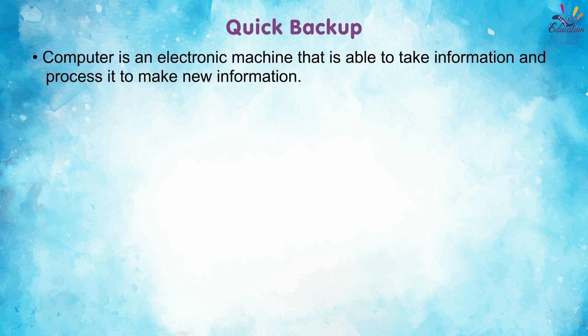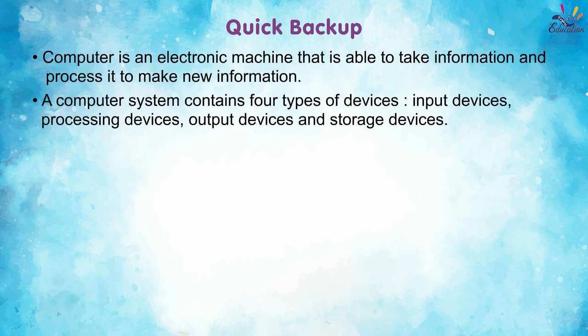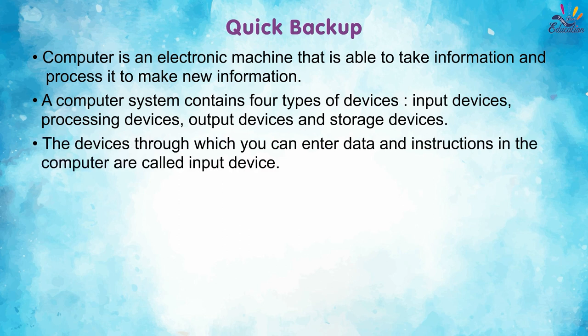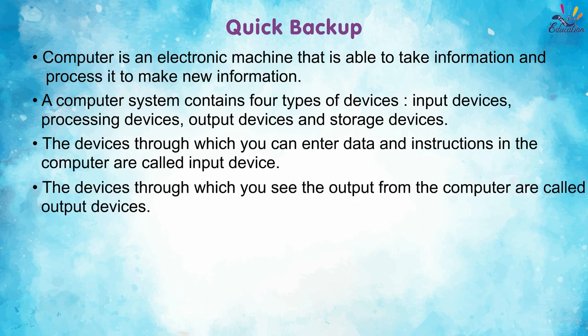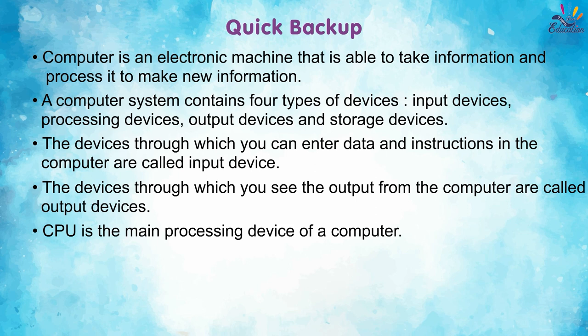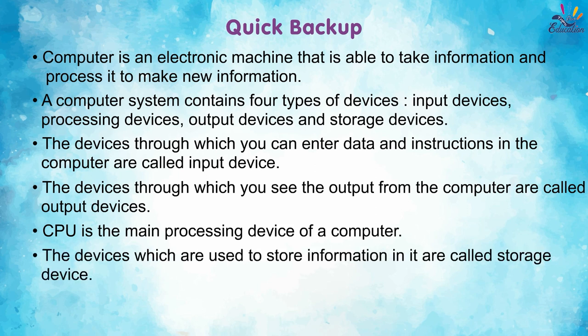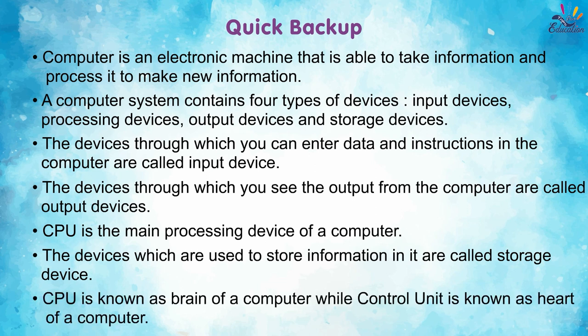Quick backup: A computer is an electronic machine that takes data and processes it to make new information. A computer system contains 4 types of devices: input devices, processing devices, output devices and storage devices. CPU is the main processing device, known as the brain of a computer, while the control unit is known as the heart of a computer.